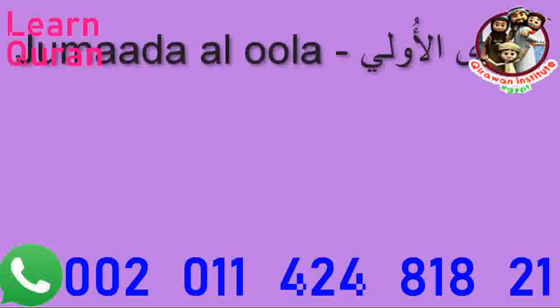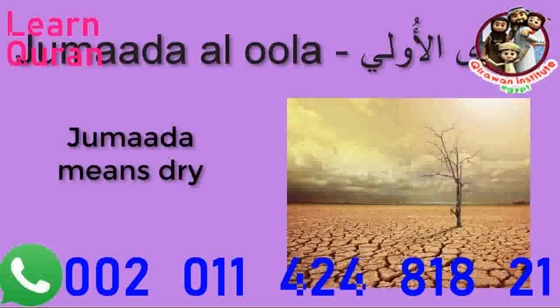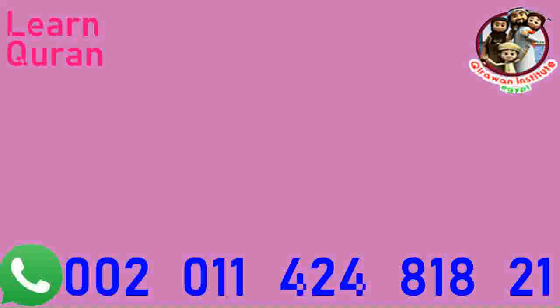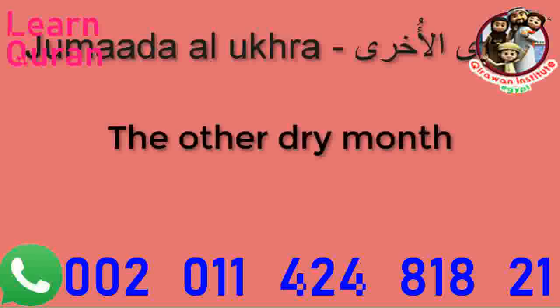The fifth month of the Islamic year is Jumada al-Ula. Jumada means dry — this was the first month of the drought. The sixth month of the Islamic year is Jumada al-Ukhra. Literally, it means the other dry month.